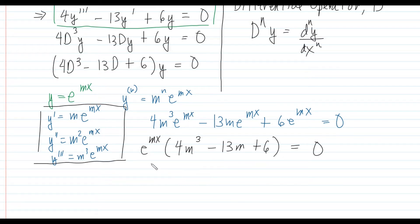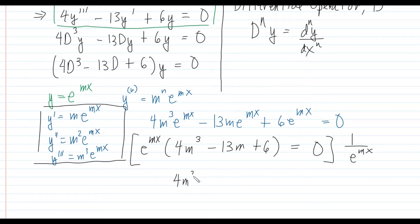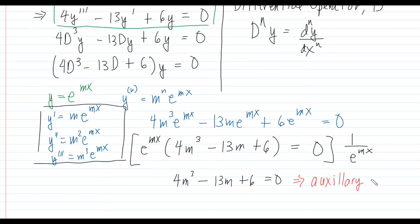If we divide the whole equation by e^(mx), what is left is what you call the auxiliary equation: 4m³ minus 13m plus 6 equals 0. This is called the auxiliary equation, or f(m) equals 0.